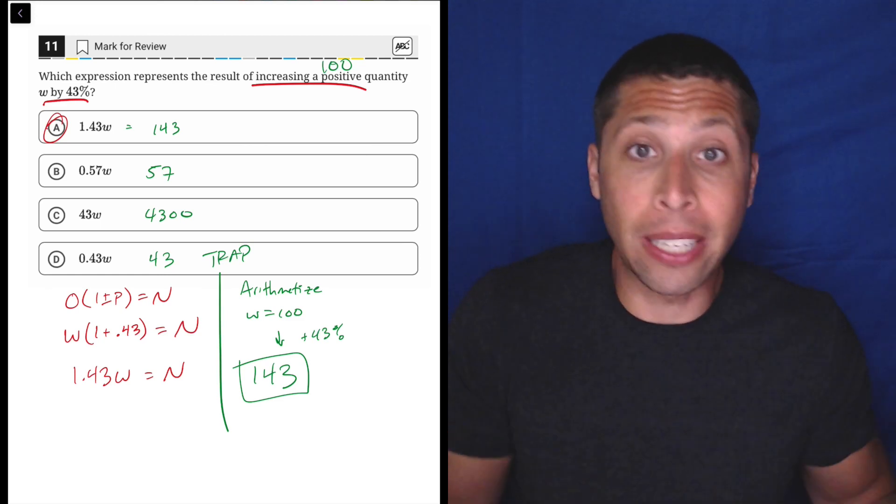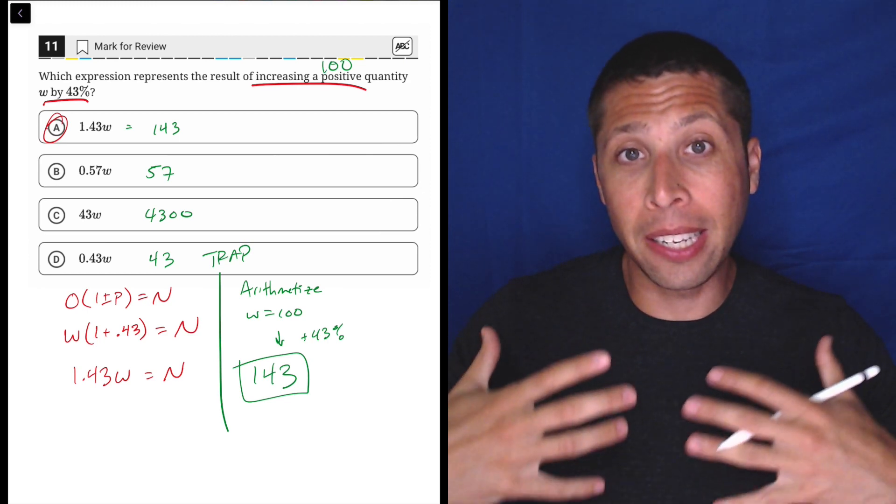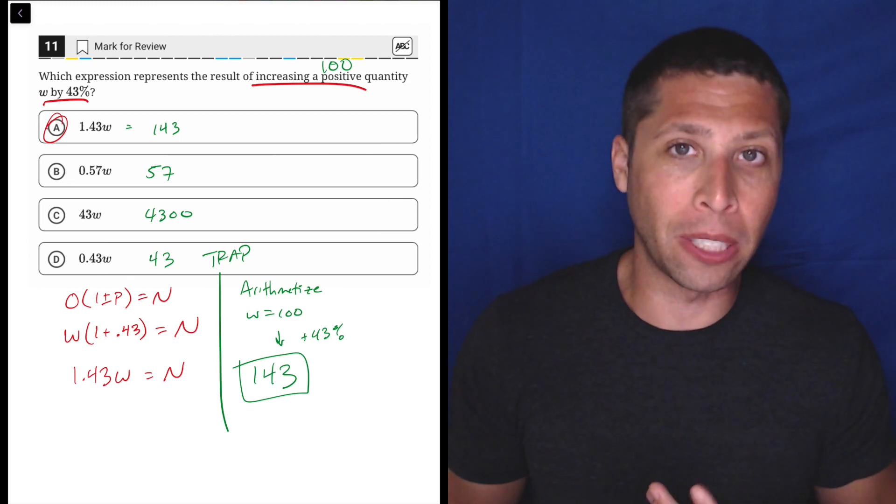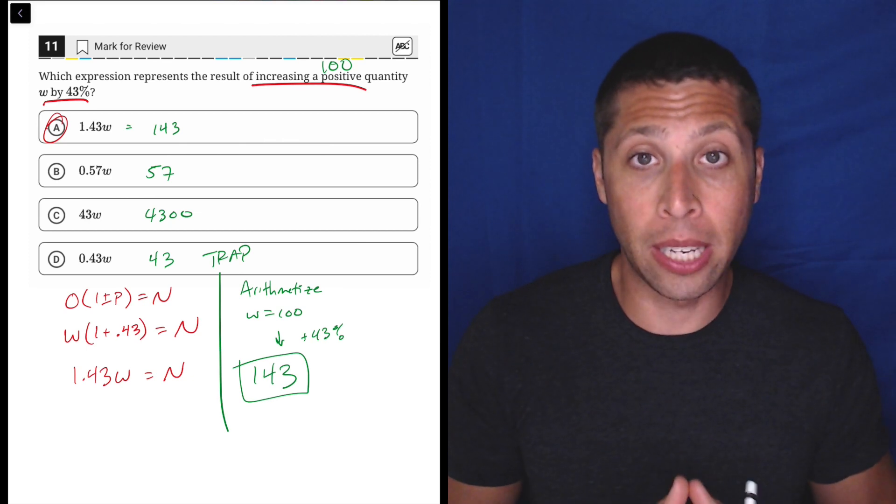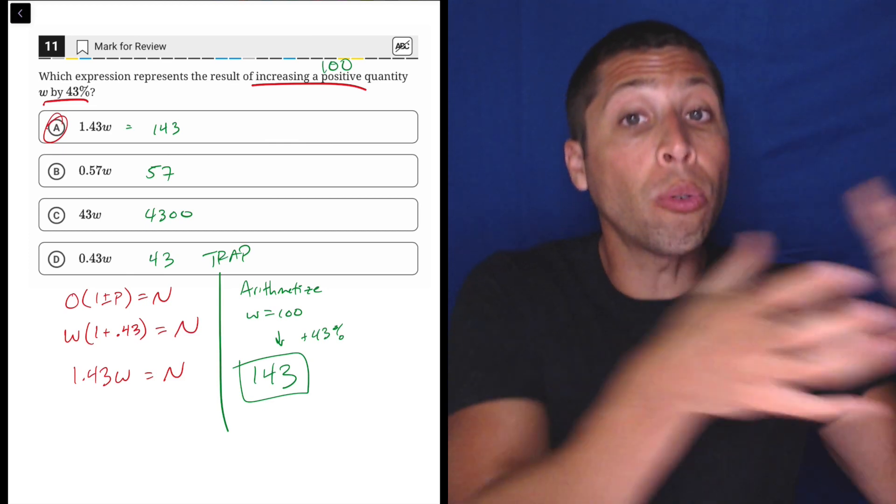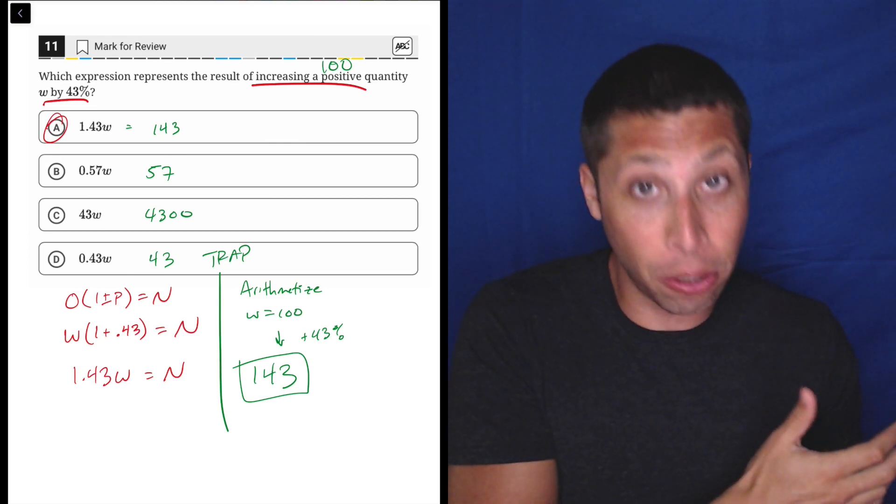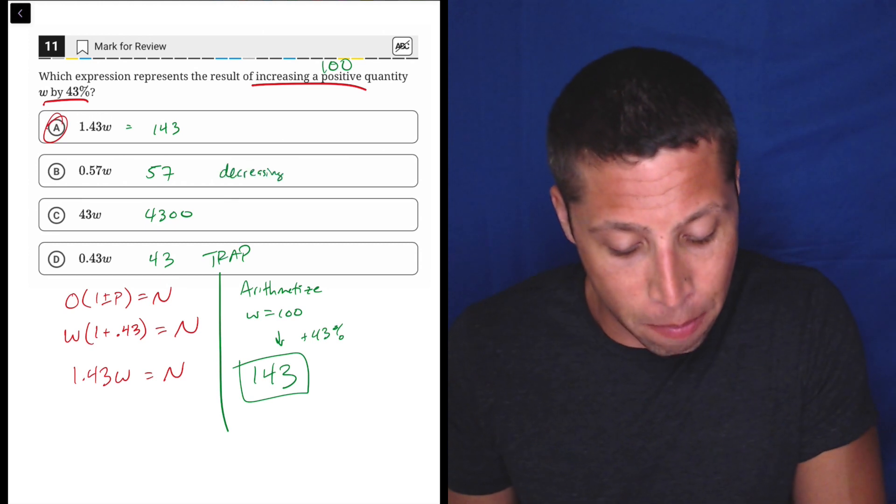So this choice D doesn't make any sense because that's less. So I hope that that's easier to hear. But basically, you do need to be comfortable enough with percentages that you can kind of spot this difference between taking 43% of something versus increasing something by 43% or decreasing something by 43%, which would be choice B here.